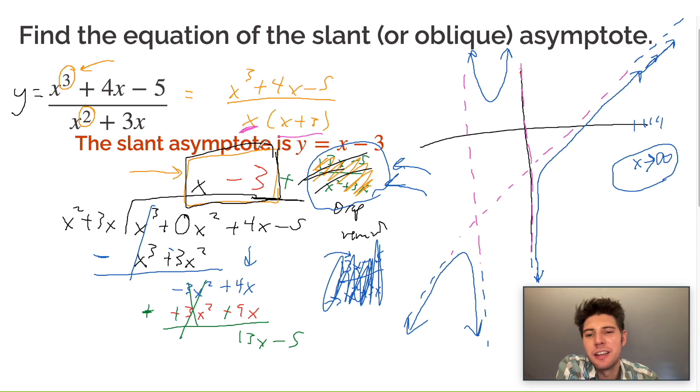But the key to these, if you're just trying to find the slant asymptote, is drop the remainder. Just get rid of the remainder. And it's the piece that divided evenly. And that's the answer to the question.